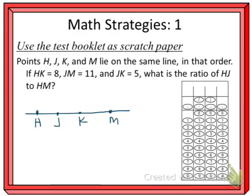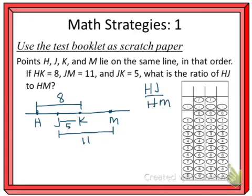Alright, and if H to K, so from here to here, is 8, and from J to M is 11, and J to K, so right in between here we've got 5, we want to know what is the ratio of HJ to HM. So just drawing a picture here is going to help us figure out how big everything has got to be.